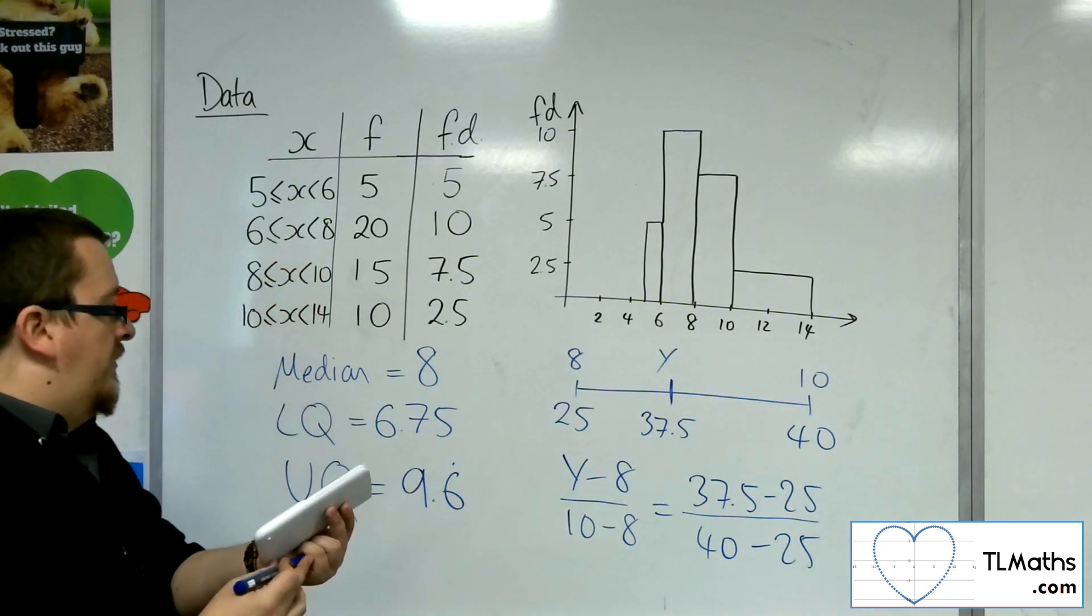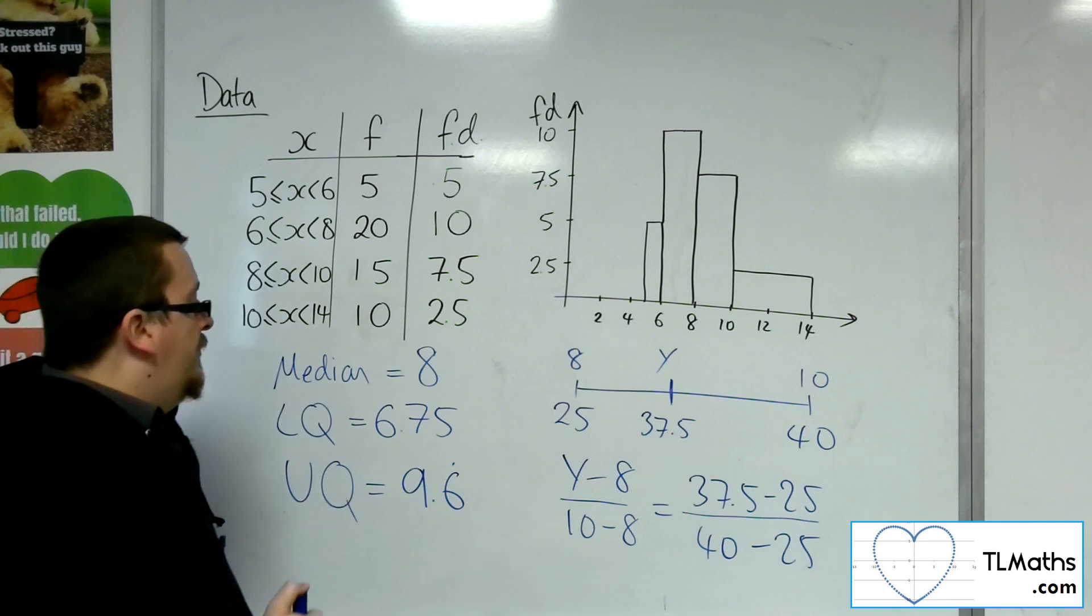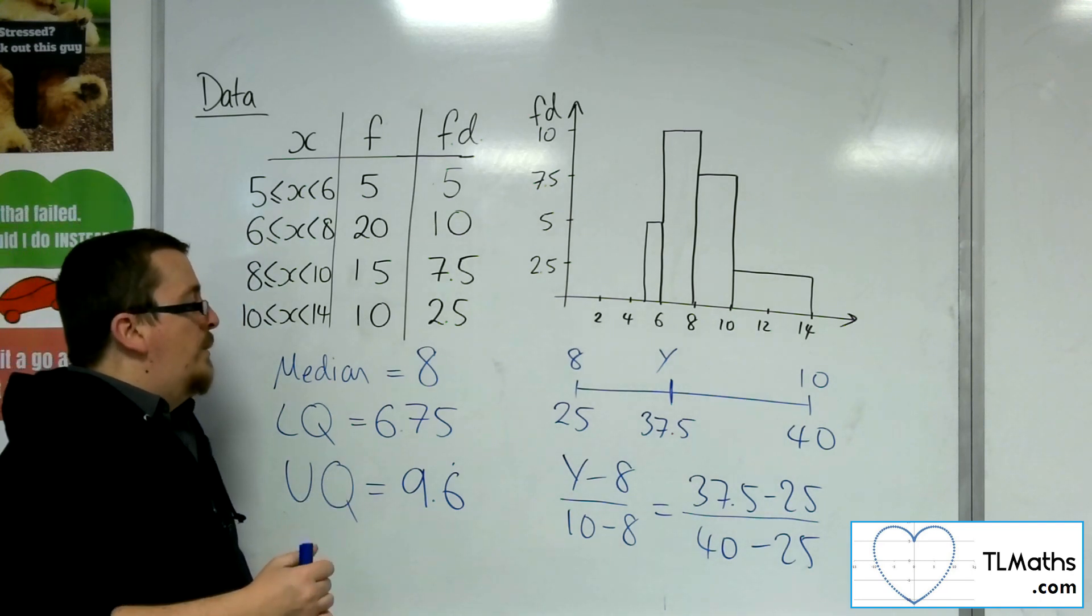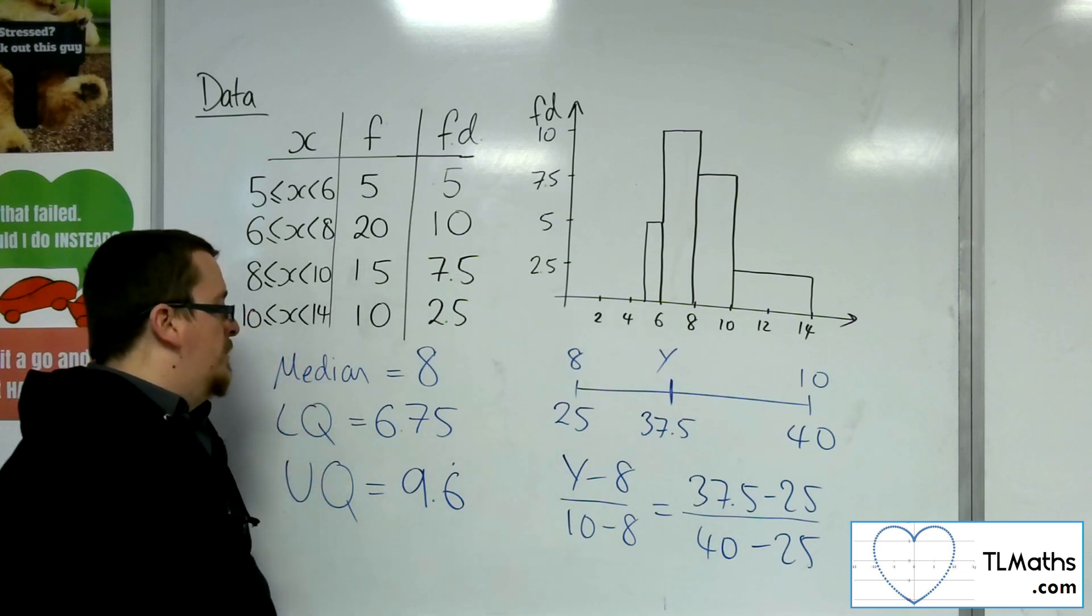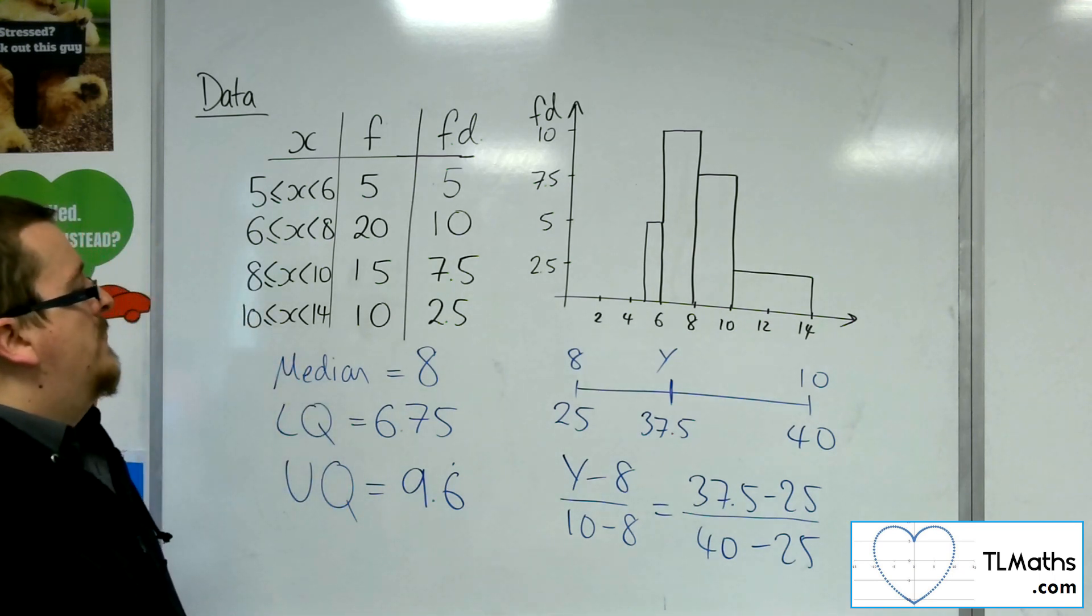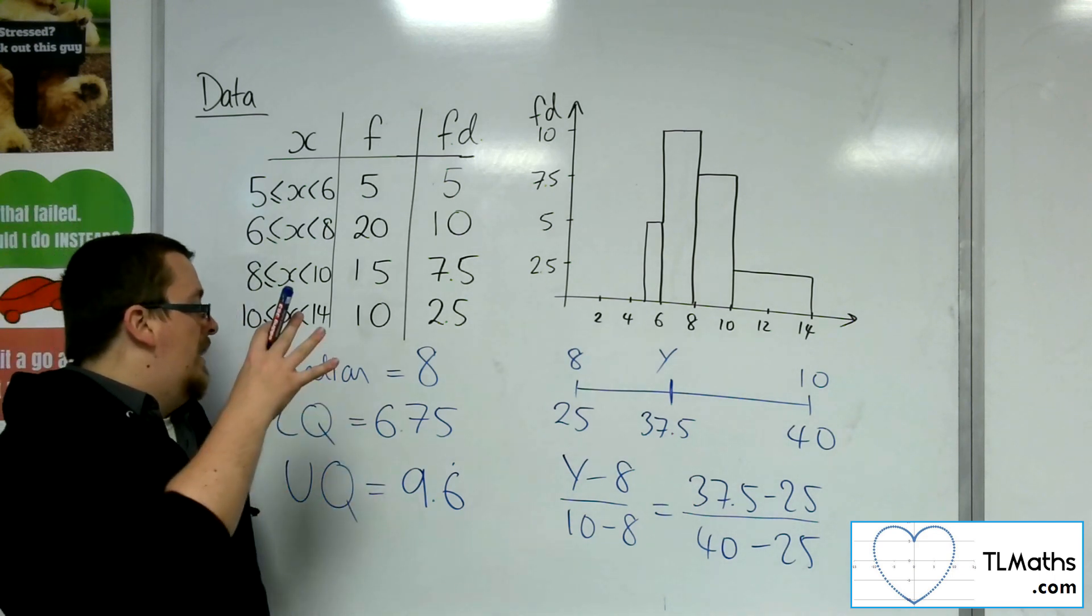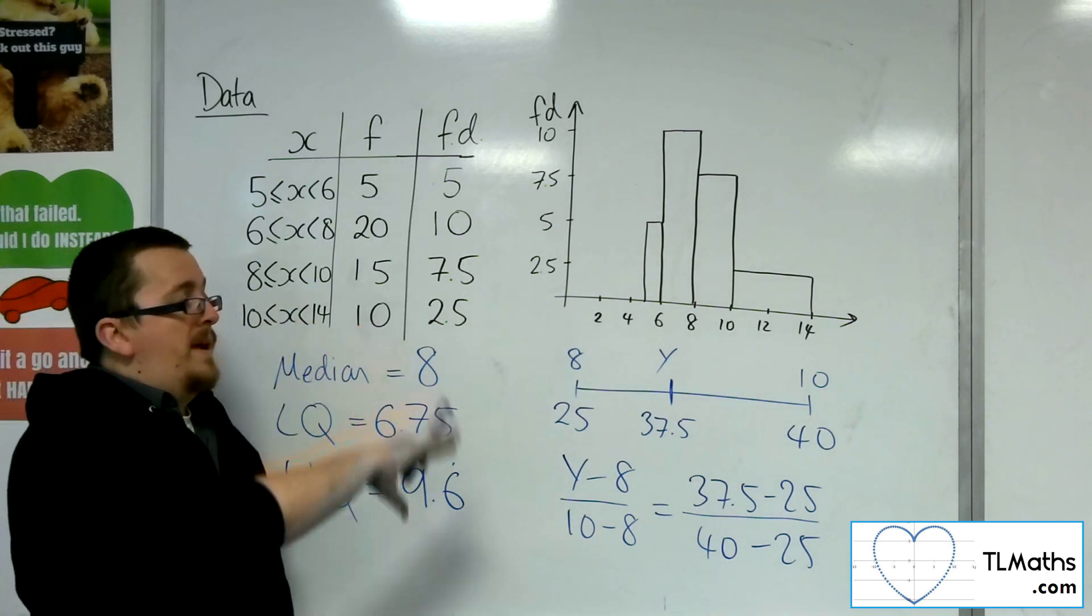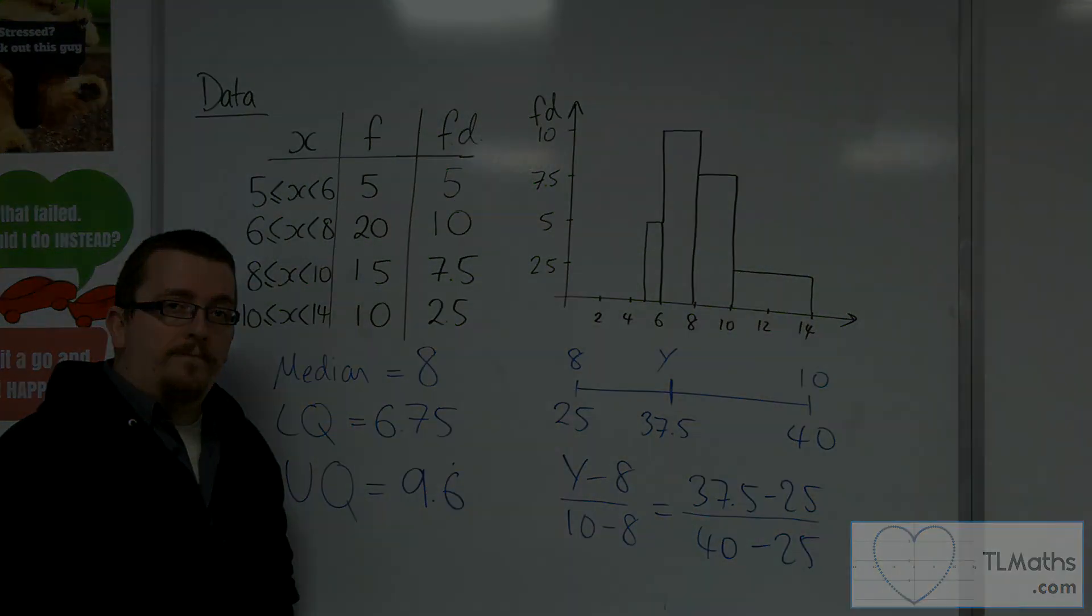9.67 to 3 sig fig. So I believe we got 10 from our estimate for the cumulative frequency. So that's how we can use interpolation to calculate the median and quartiles from a histogram, but also from a grouped frequency.